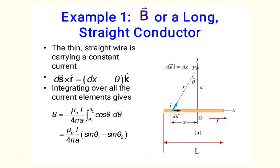Let us consider several examples. First, let us calculate the magnetic field created by a straight conductor of length L. We select the x-axis to be parallel to the conductor. We compute the magnetic field at point P at distance a from the conductor. Point P does not have to be above the middle of the conductor, but for convenience we select the origin O corresponding to x equals 0 to be exactly below point P. To find the total magnetic field at P, we break the conductor into many small elements ds. We first need to find the distance r and the unit vector r-hat from ds to P. The length ds is simply equal to dx, so we could perform integration over dx from the left to the right end of the conductor.